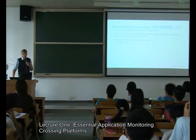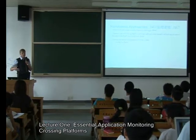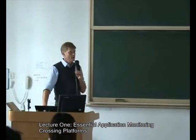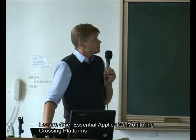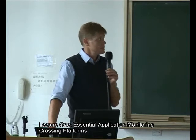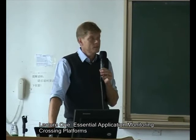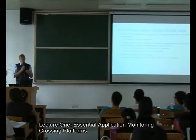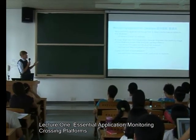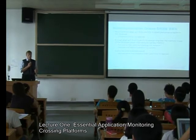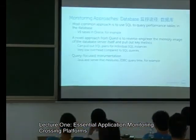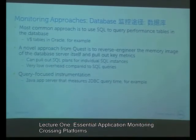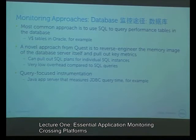Similar techniques can be done in .NET — there's an API that gives stack traces, and you can also do bytecode instrumentation for .NET. For web servers, there aren't many standards; Tomcat lets you get at some basic JVM data; on the Apache side we mostly scrape the logs. In the database world, a database typically has a series of tables you can query for performance data. We also have a product called Performance Analyzer that reverse-engineers the memory image of the database to pull out SQL plan data — a very complex product that produces great data at almost no overhead.